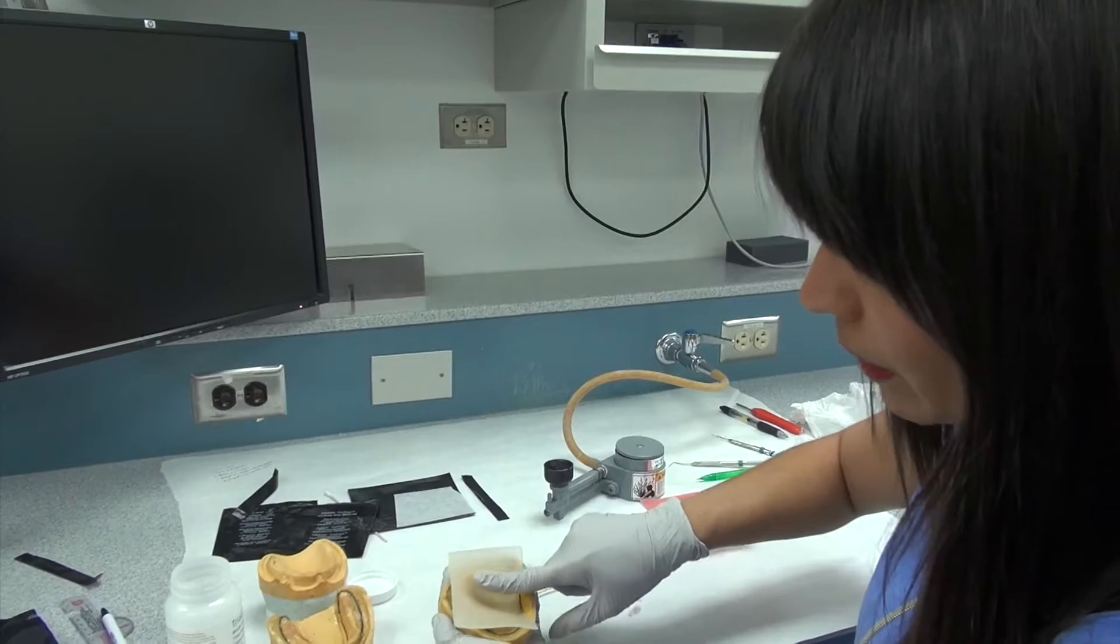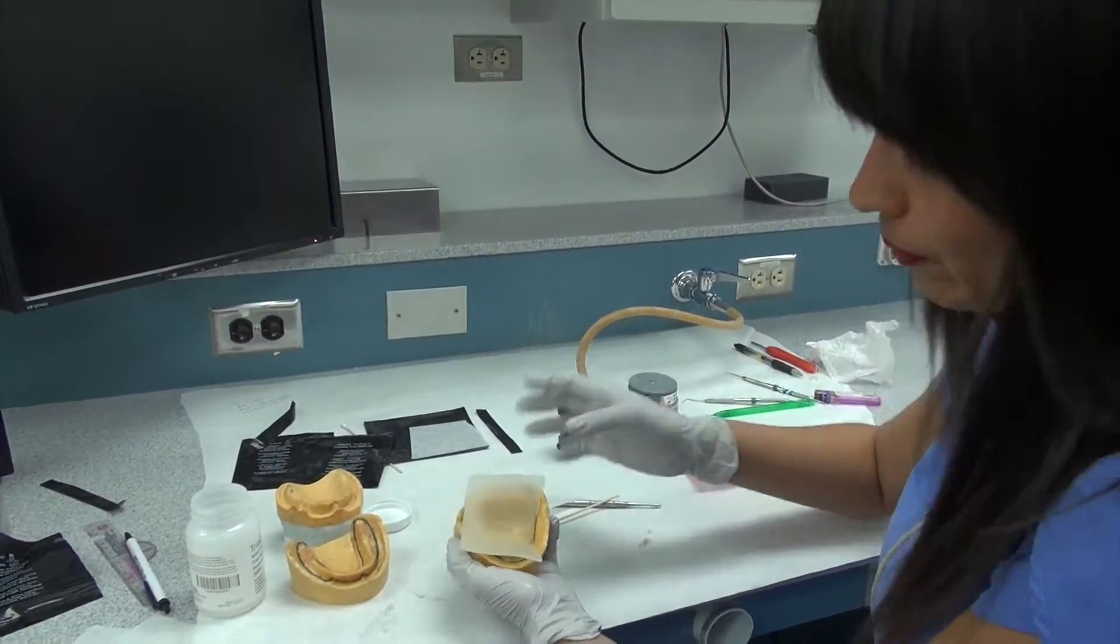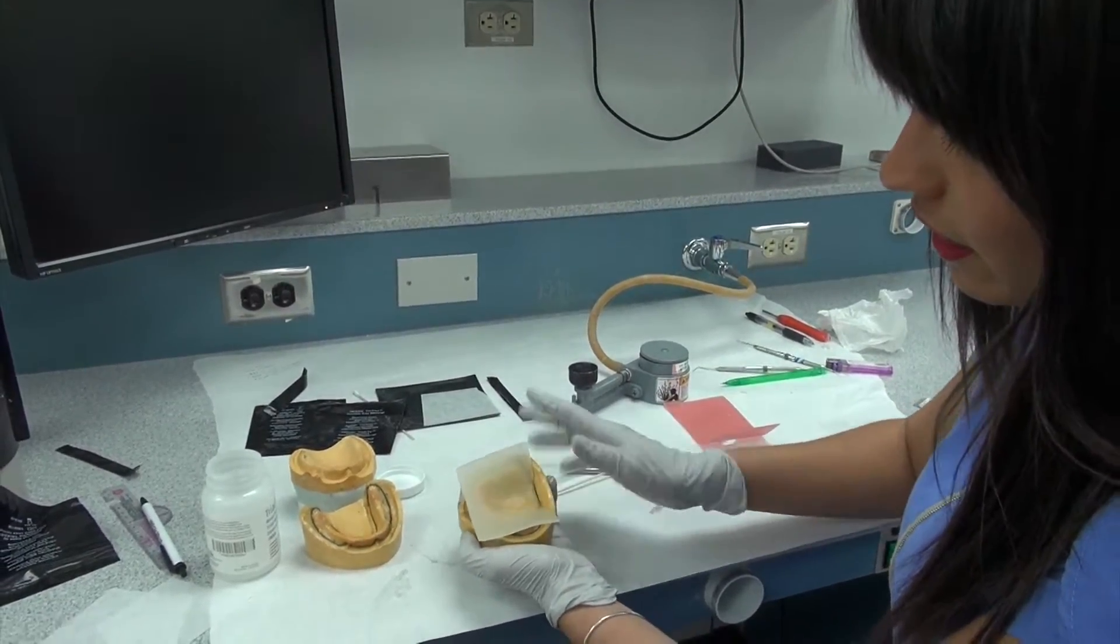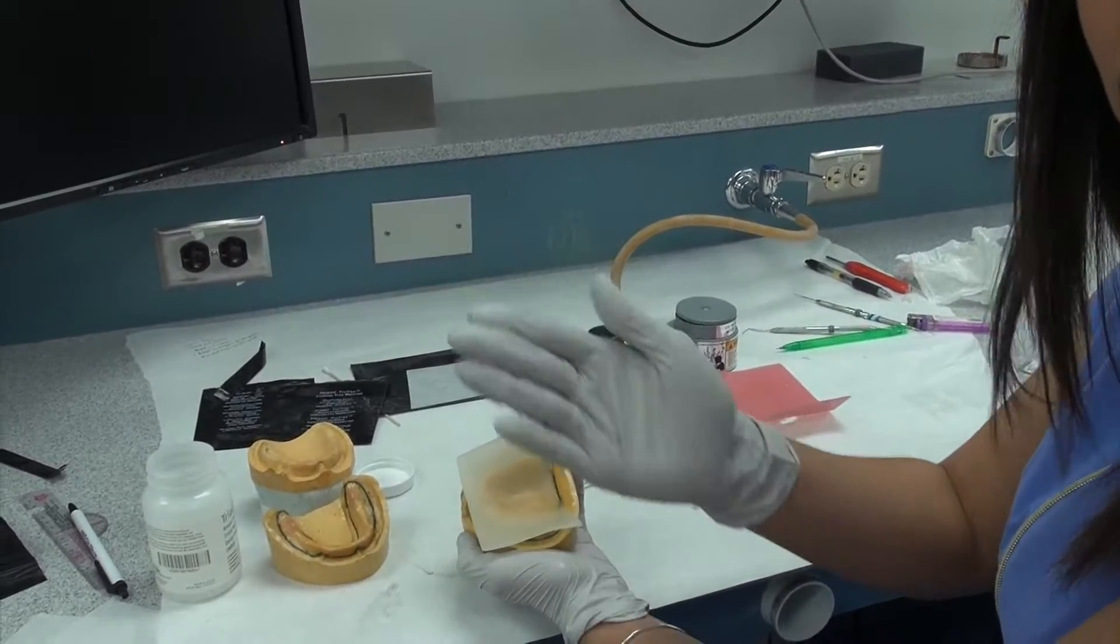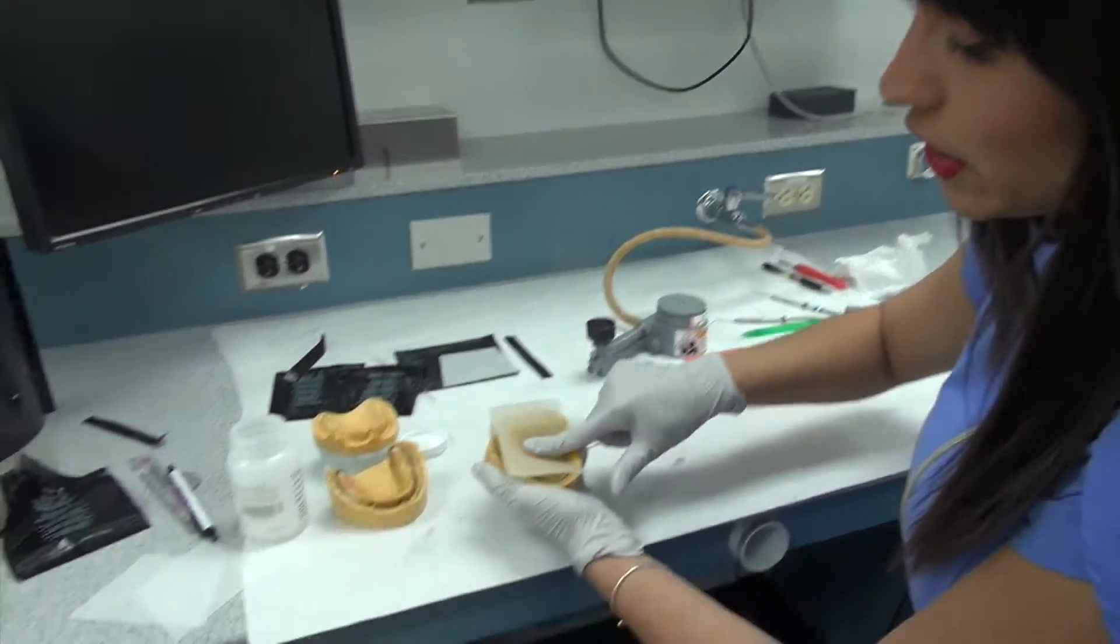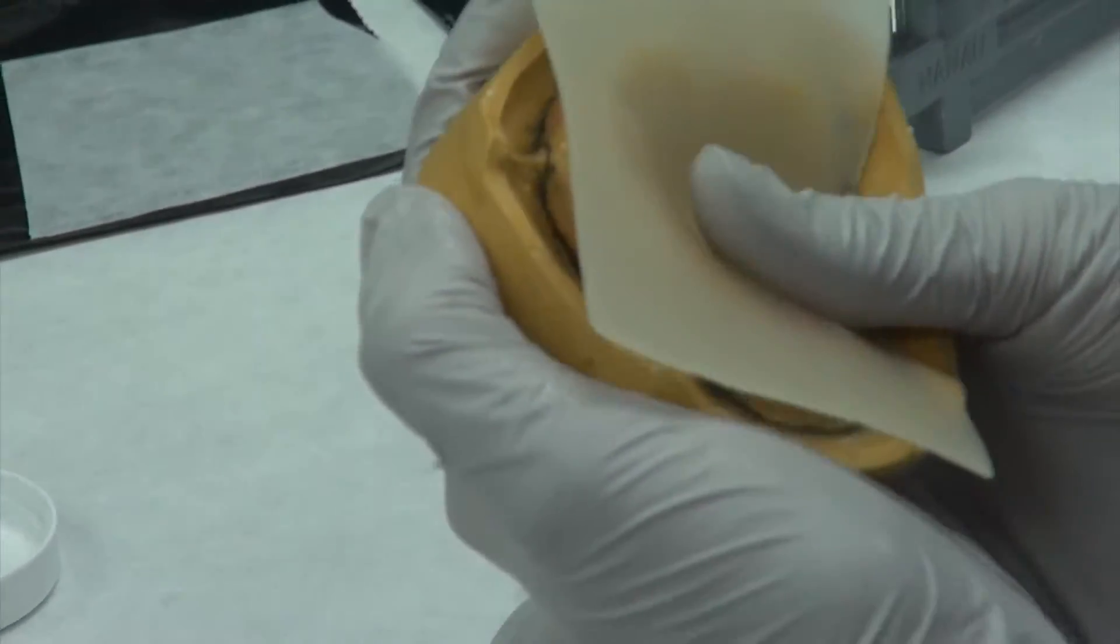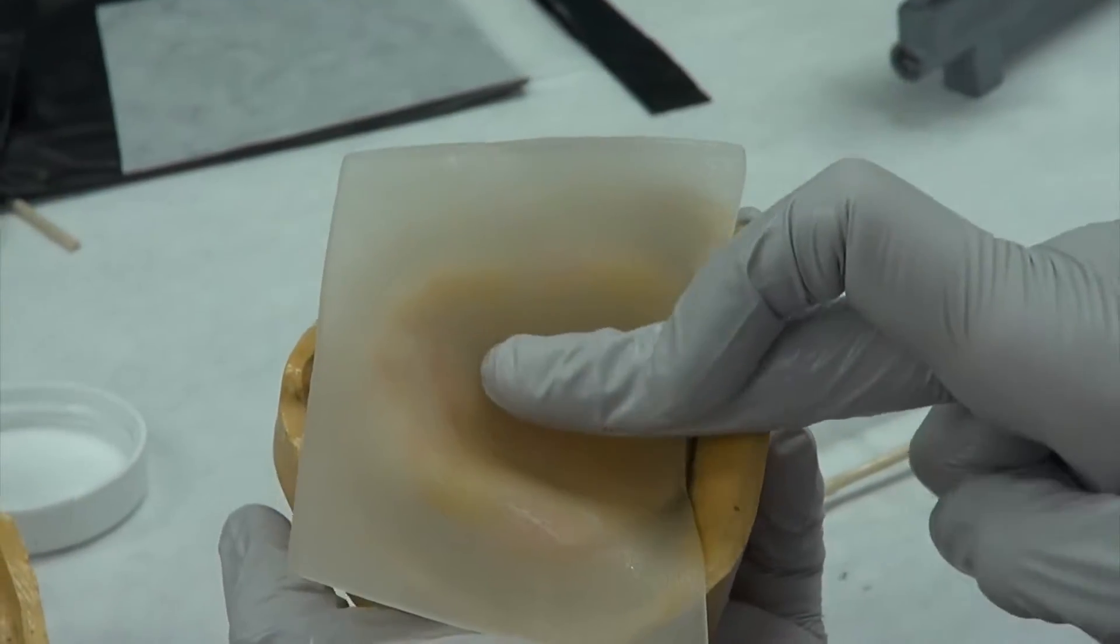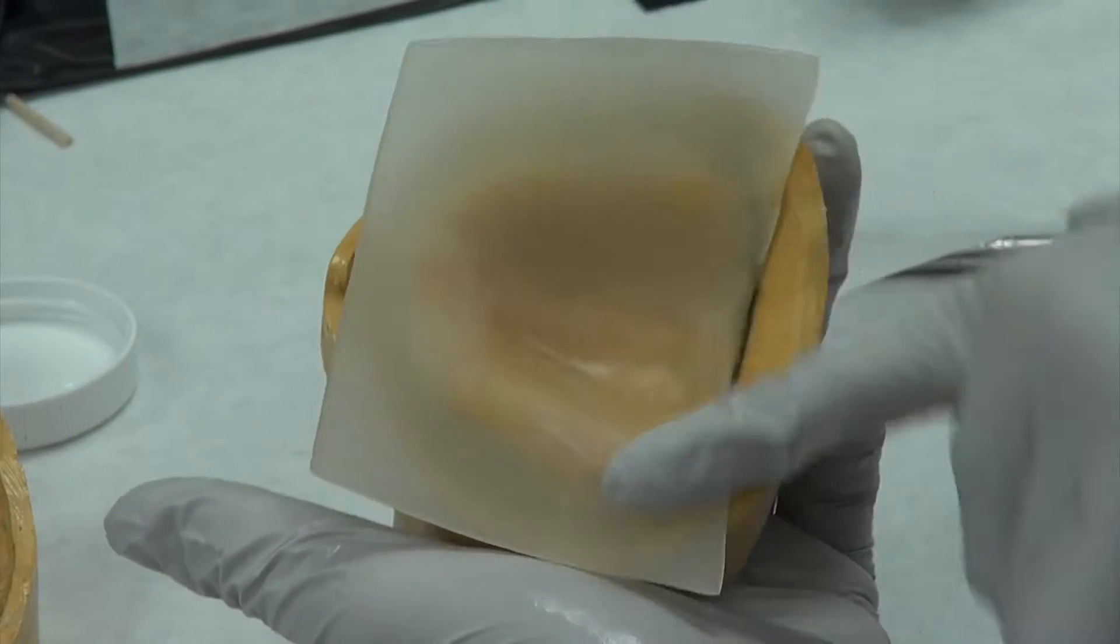Now when you apply pressure, you want to apply pressure first to the median palatal suture. And then from there you want to push outwards towards the ridge. Now what that's going to do is you're pushing any air bubbles that might get trapped, you're pushing them to the outer edge. So sealing it from the internal surface to the outer edge.